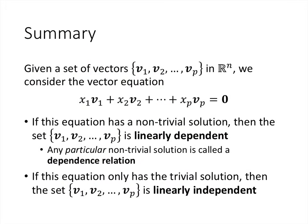So just to wrap this up — and this concept of linear dependence tends to be something that folks have a hard time wrapping their heads around, so feel free to watch this video multiple times and try to work through the examples on your own. Given a set of vectors, we look at the vector equation x1v1 plus x2v2 plus ... plus xpvp equals the zero vector. If that equation has a non-trivial solution, then the set of vectors is linearly dependent, and any particular non-trivial solution is called a dependence relation. But if that vector equation only has the trivial solution, then the set of vectors is linearly independent.